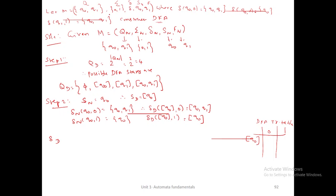So how can we solve it? The solution is: first you write those 5 tuples and separately mention the answers. Let us take the first parameter qn, which is already given as {q0, q1}. Sigma n is {0, 1}. Sn is q0, fn is q1. These are all 5 parameters. Then in step 1, we do the possible subset calculation of DFA.